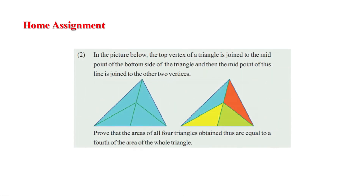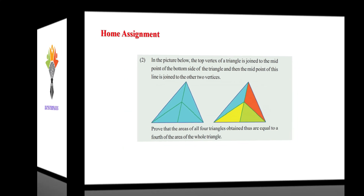Today we learned two things: a line from the vertex of a triangle divides the opposite side and the triangle area in the same ratio; and in any triangle, the angle bisector divides the opposite side in the ratio of the sides of that angle. Your assignment is from page 20 of your textbook: the top vertex is joined to the midpoint of the bottom side, and the midpoint of this line is joined to a vertex — prove that all four triangles obtained have equal area, each a quarter of the whole triangle. Hope you understood. Study well. Stay safe. Have a nice day.